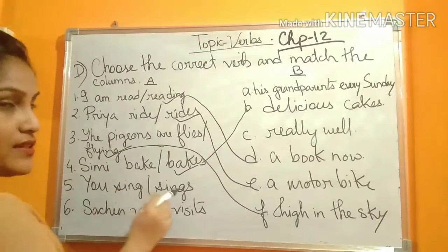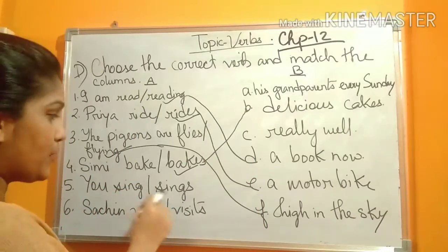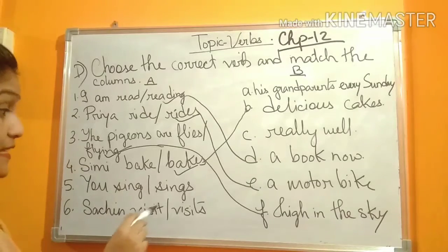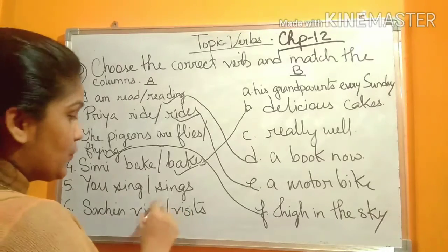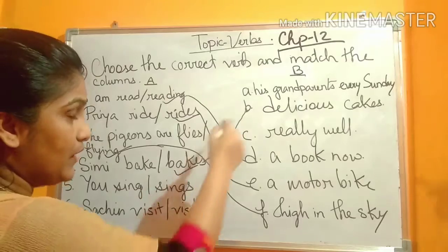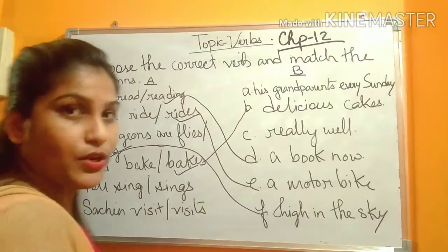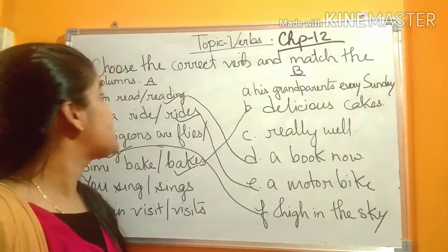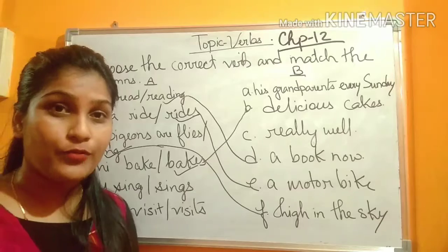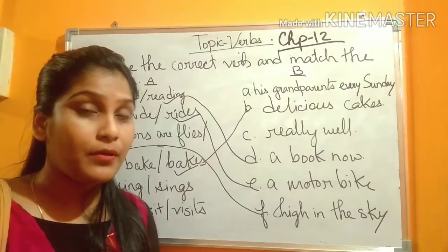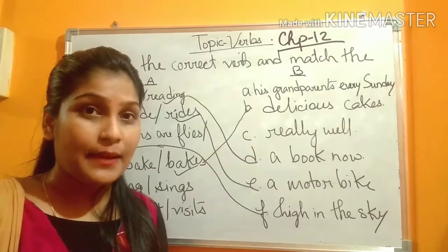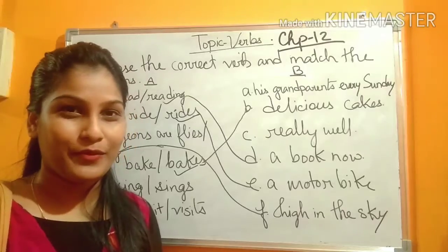Number five: You — sing or sings? Do it by yourself. Number six: Visit or visits? You will first tick mark the correct one, then match it. So you will do questions C and D in your book and send me the answers. Remember, everyone should send me the answers. Thank you everyone.